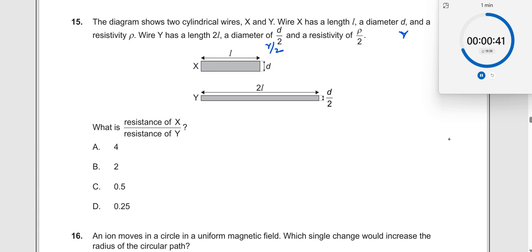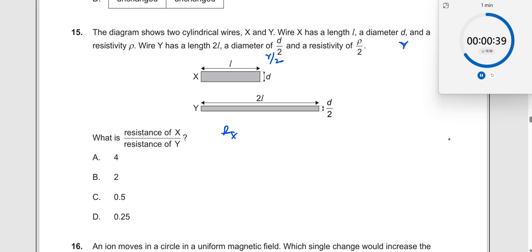Now I want RX by RY. So RX divided by RY will be written as ρX LX divided by AX, divided by ρY LY divided by AY, because this is the formula. So it should be ρX LX times AY upwards, divided by ρY LY times AX. Now let us substitute each of these values.